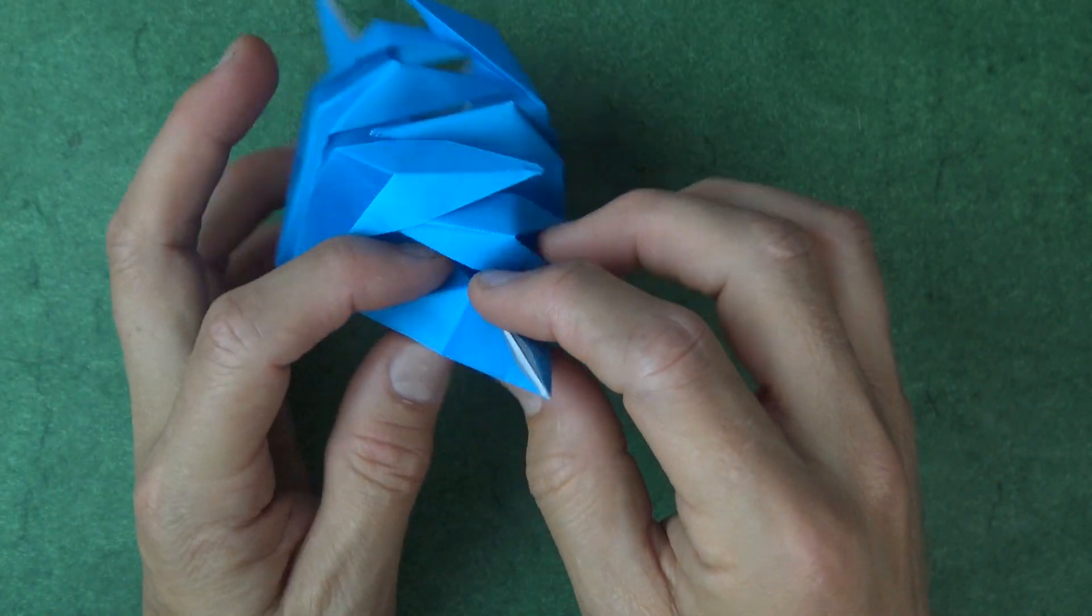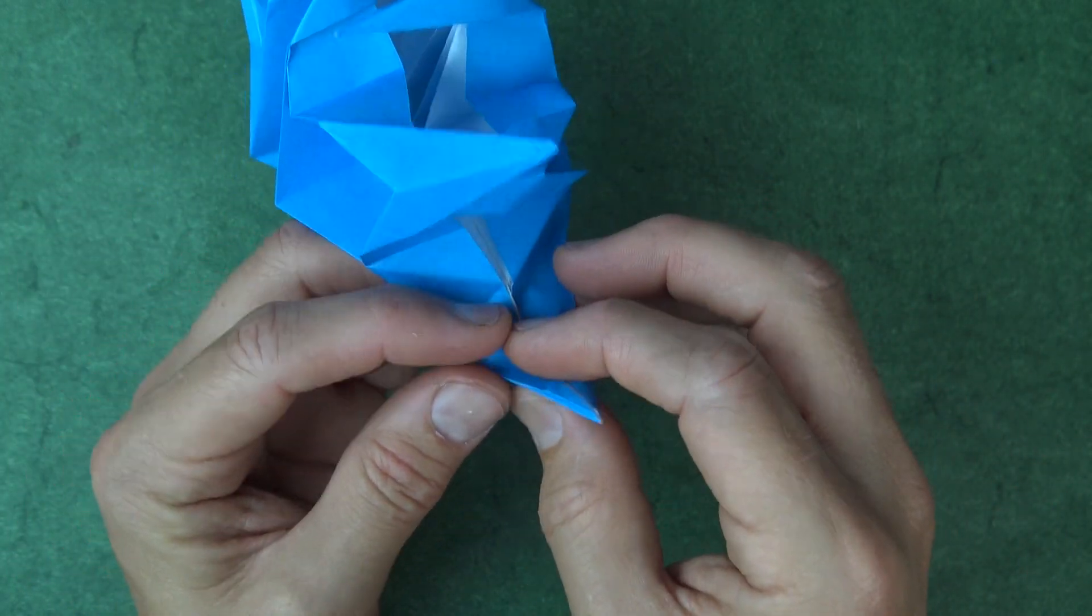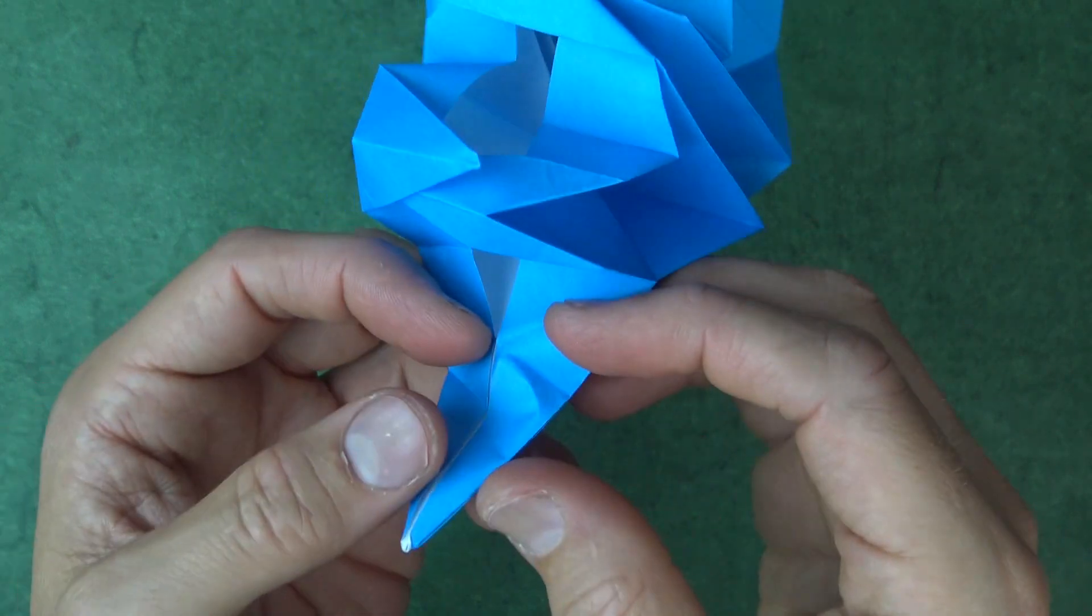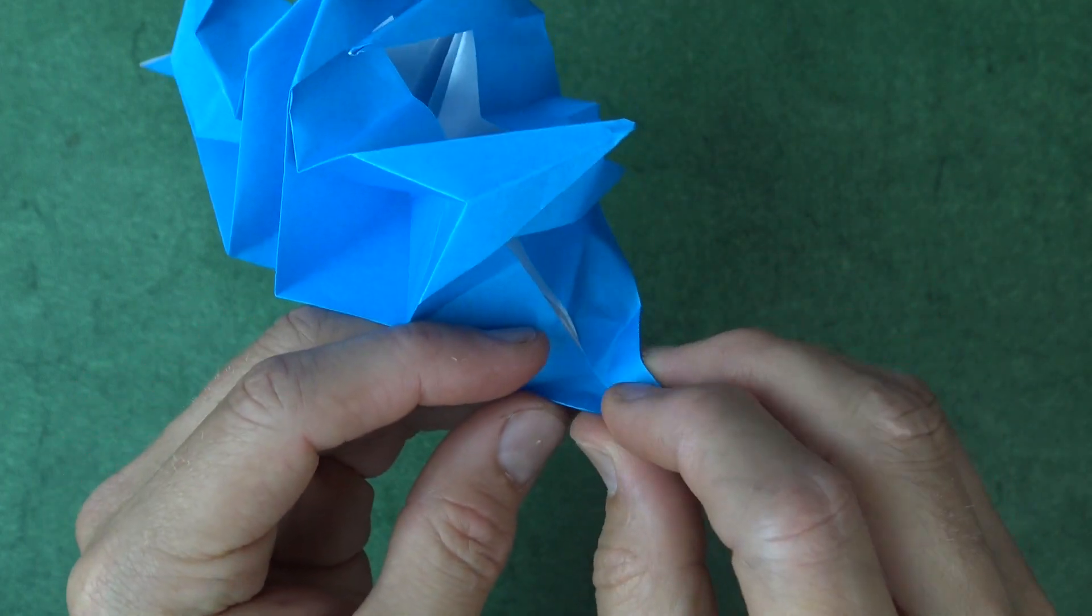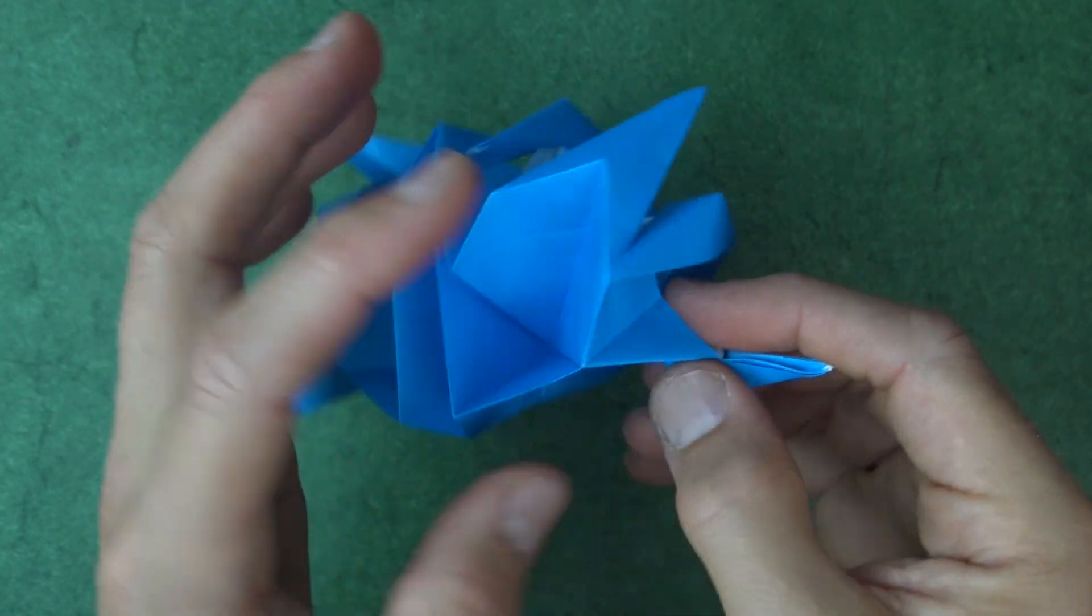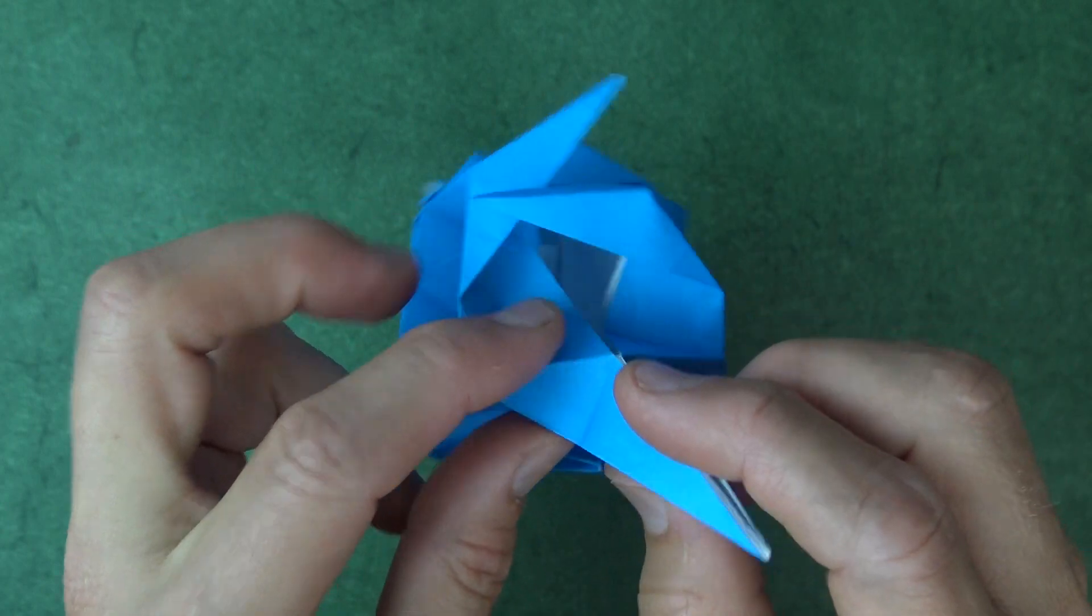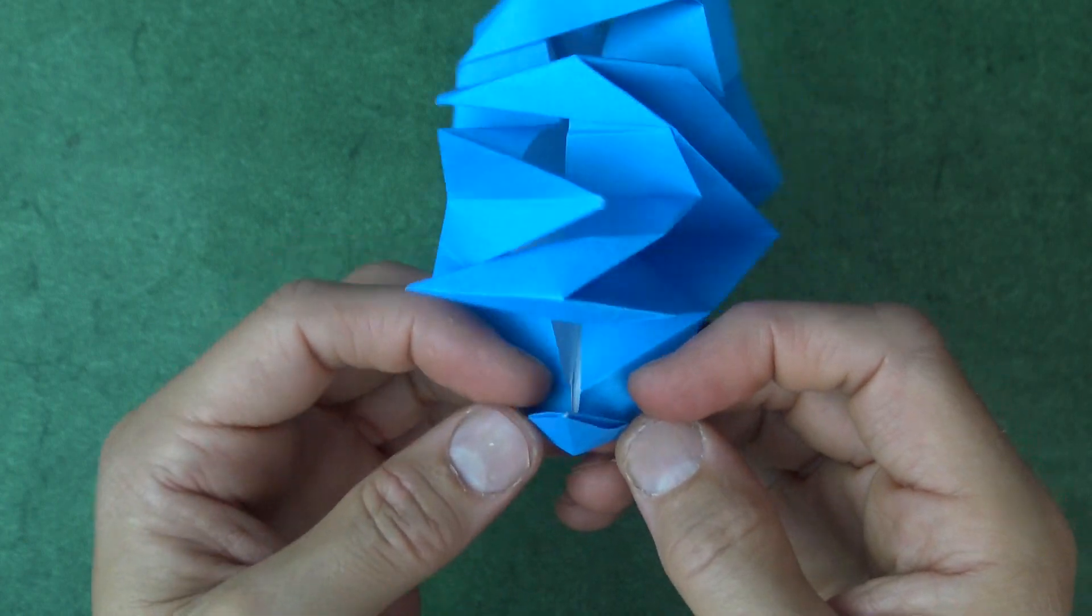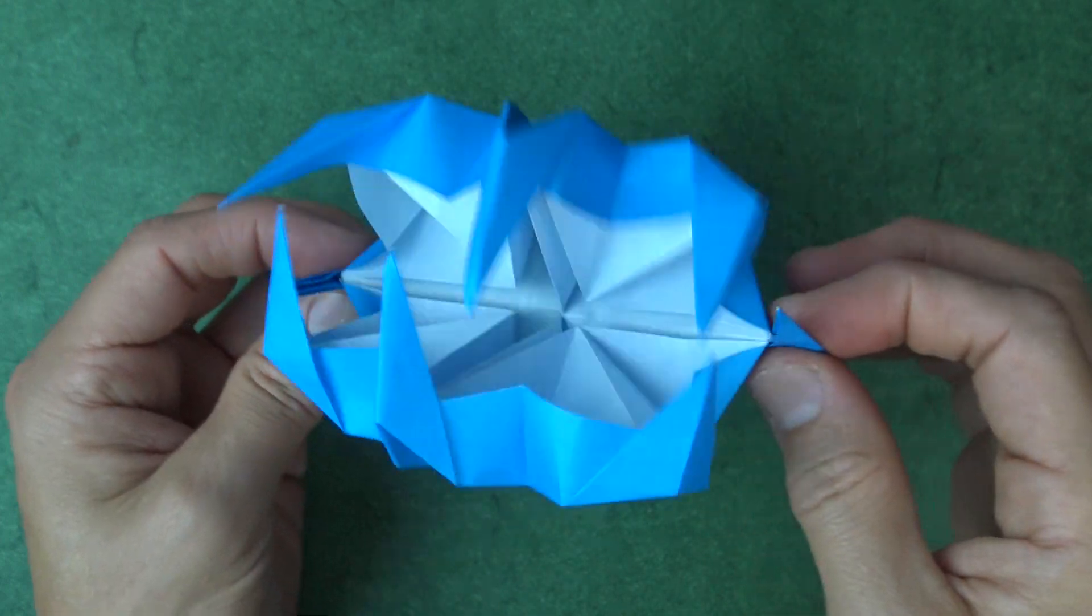And now, we can make outside reverse folds on the arms. So, open it like this, and fold this edge to the crease. And unfold, and fold this edge to the crease. And now, pinch. And there's the outside reverse fold. And that's what it looks like, and repeat on this side. Okay, so that gives another sort of tentacle tooth.